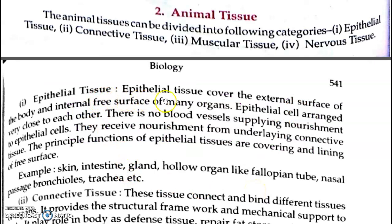First is epithelial tissues. Epithelial tissues cover the external surface of the body and the internal surface of many organs. Epithelial cells are arranged very close to each other, as shown in the diagram. There are no blood vessels supplying nourishment to epithelial tissues; they receive nourishment from the underlying connective tissues.